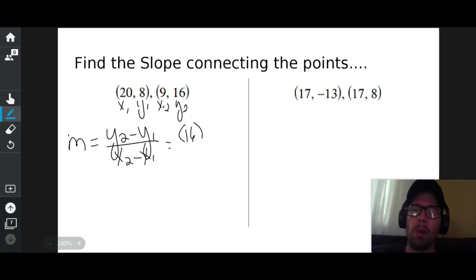Instead of y sub 2, I'm going to write out 16 because I called y sub 2 16 up there. Minus is minus. And instead of y sub 1, I'm going to write out 8, not 20, 8 because y sub 1 is 8. If I put 20, that would be a completely wrong answer. Instead of x sub 2, I'm going to write out 9 because that's what I labeled up there. Minus is minus. And instead of x sub 1, I'm going to write out 20. There's my 20.